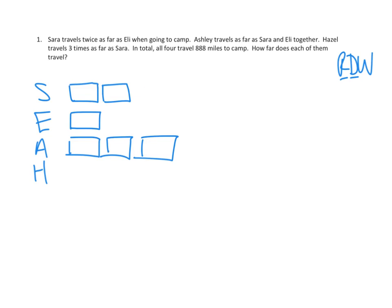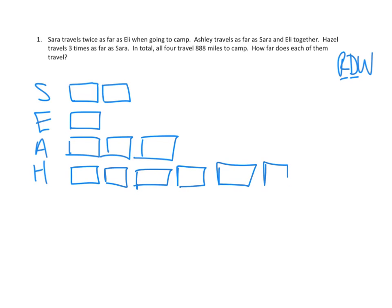Hazel travels three times as far as Sarah. Well, Sarah traveled two of those big units, and Hazel travels three times as far as Sarah. So that means Hazel travels six of those units. So let's go ahead and do that: one, two, three, four, five, six. So — Sarah twice as much as Eli, Ashley as far as those two put together, and Hazel three times as much as Sarah.